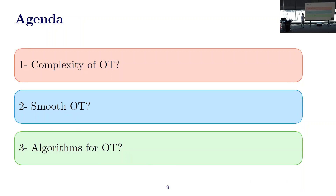While semi-discrete optimal transport has received several applications, its computational complexity is not well studied in the literature. The first focus of my talk will be to address this computational gap. In the second part, I will talk about a regularization scheme to improve tractability. At the end of the presentation, I will discuss iterative algorithms that can solve both the smooth and the original semi-discrete optimal transport problem — these algorithms converge faster for the smooth problem. I'll pause here if there are any questions from the first part.